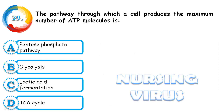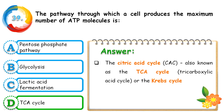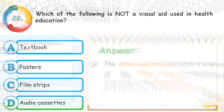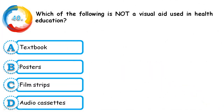Question 39: The pathway through which a cell produces the maximum number of ATP molecules is the pentose phosphate pathway, glycolysis, lactic acid fermentation, or the TCA cycle. The correct answer is the TCA cycle, where the most ATP molecules are released. Other names for the TCA cycle are the citric acid cycle or the Krebs cycle.